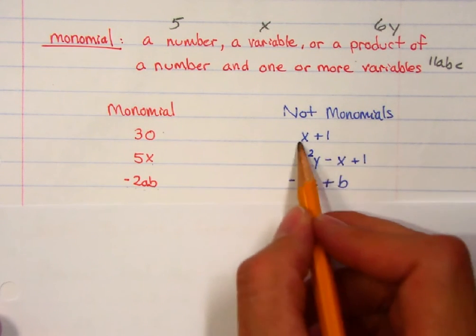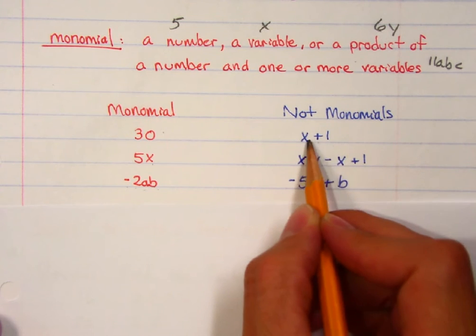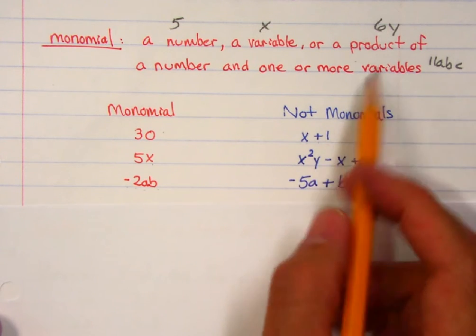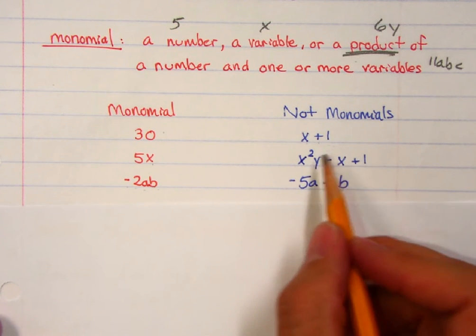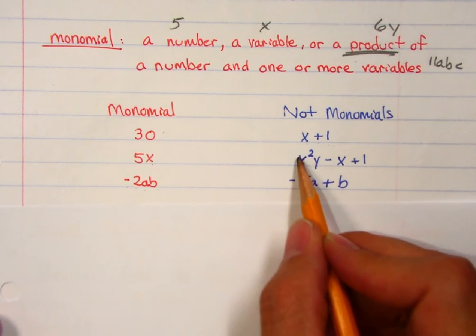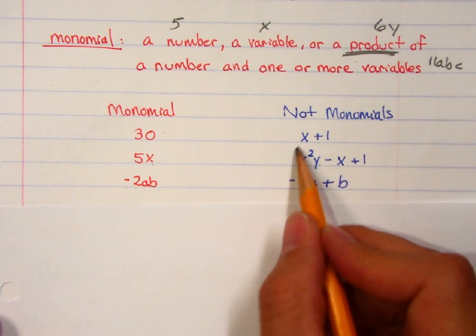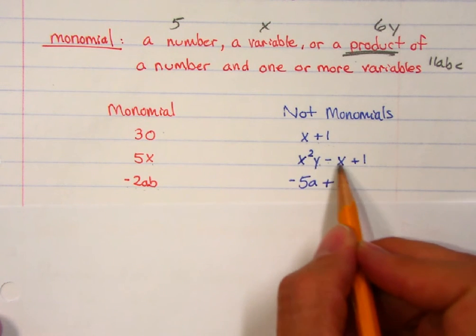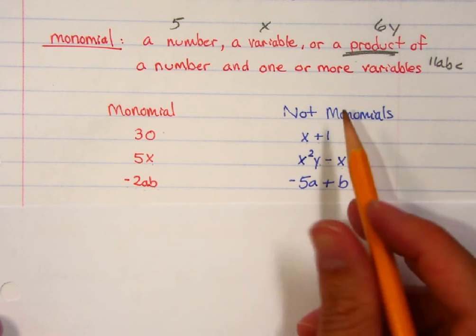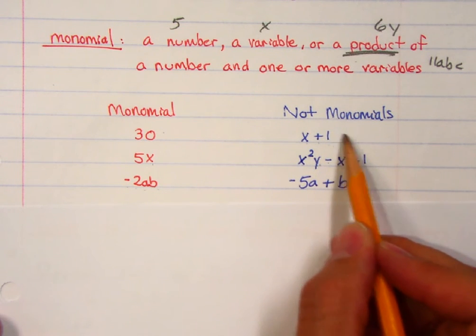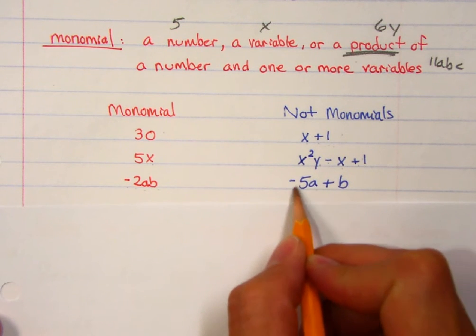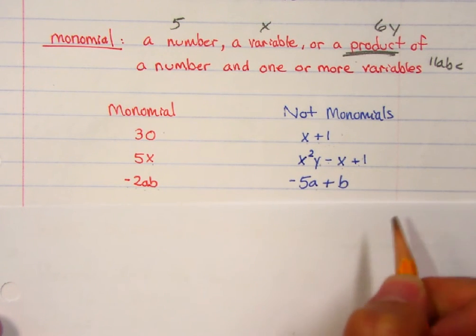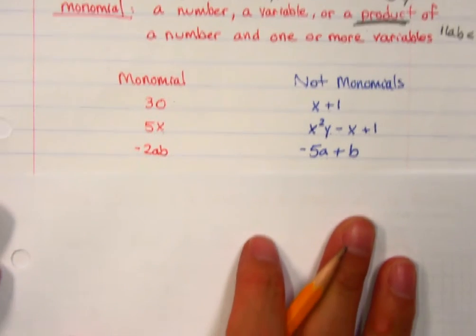Not monomials, x plus 1. Well, they're adding those two things. I don't want adding, it could only be products of, so only when you multiply. x squared y, that part's a monomial, but then as soon as I subtract an x and add a 1, that doesn't make it a monomial anymore. Just to let you know, this is called a binomial and this is called a trinomial. Anyway, over here, negative 5a, that's okay, but then we add b, that makes it not a monomial anymore. Okay, so now we know what a monomial is.